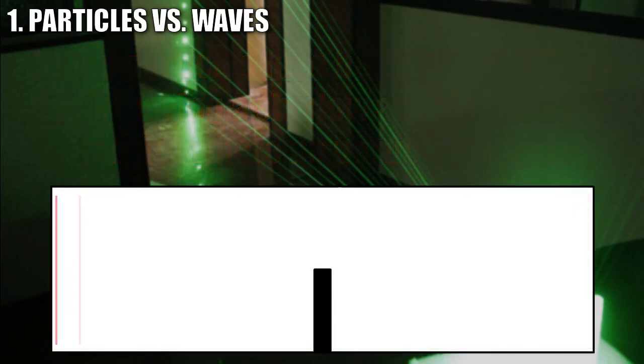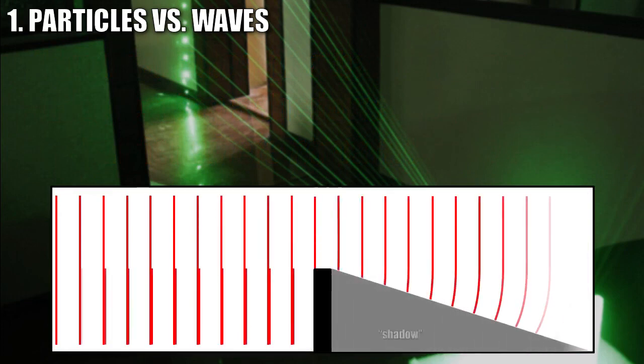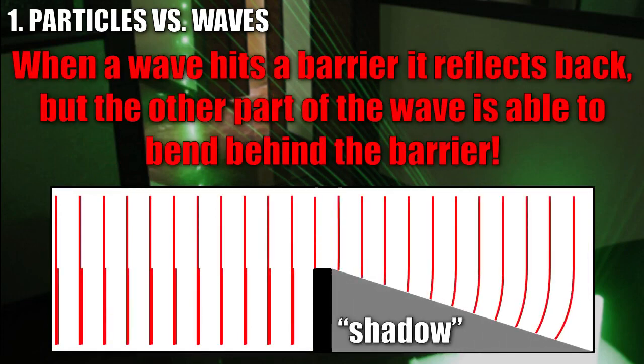When a wave hits a barrier, we see the same reflection, but notice that the wave is actually able to bend around the barrier. When a wave hits a barrier, part of it reflects back, but the other part of the wave is actually able to bend behind the barrier. Here we see energy from this wave found on the opposite end of the barrier. This behavior of waves is completely unique and is not exhibited by particles.